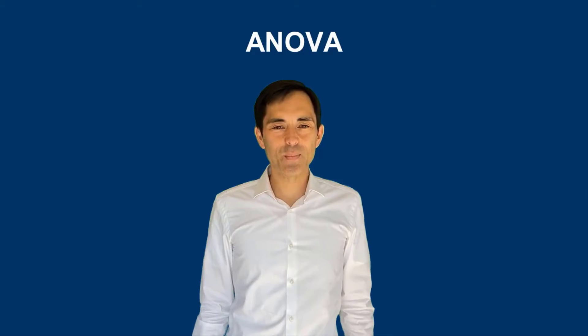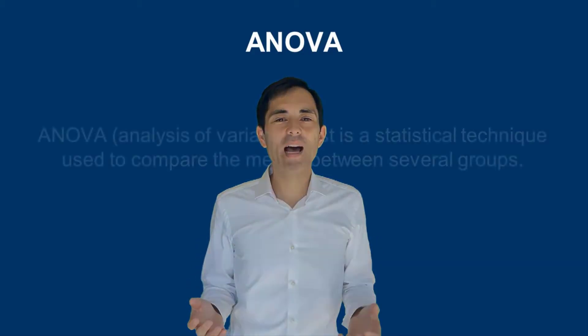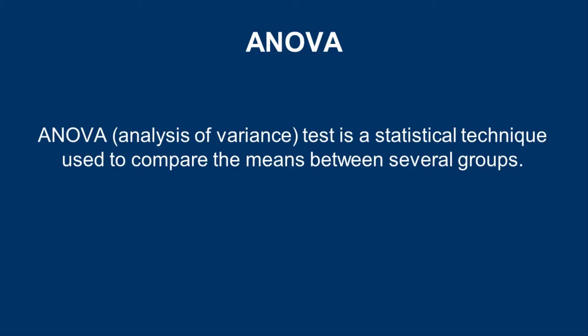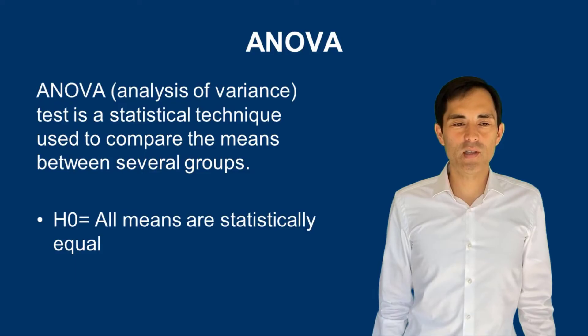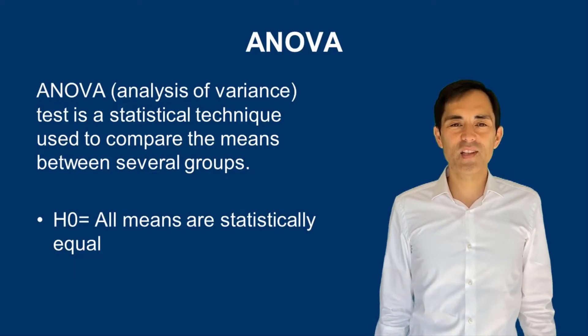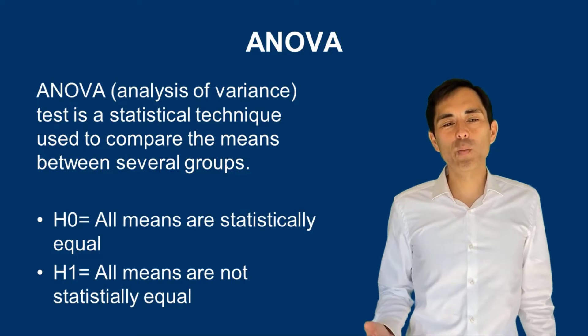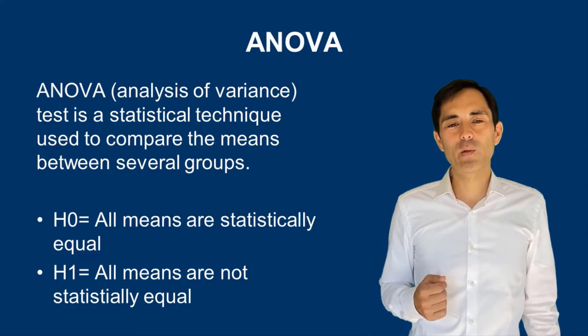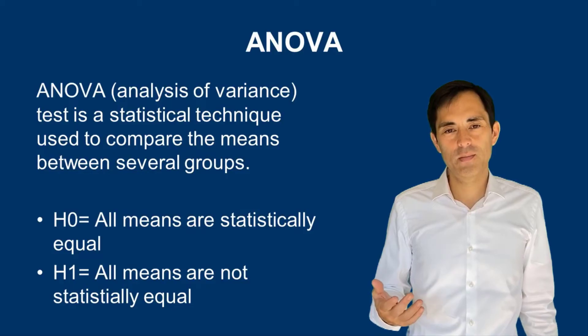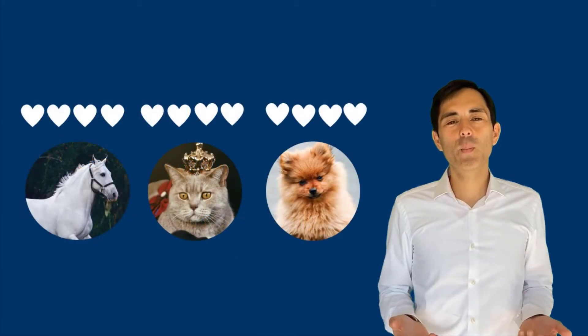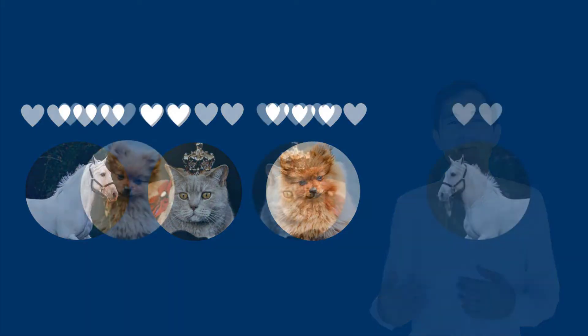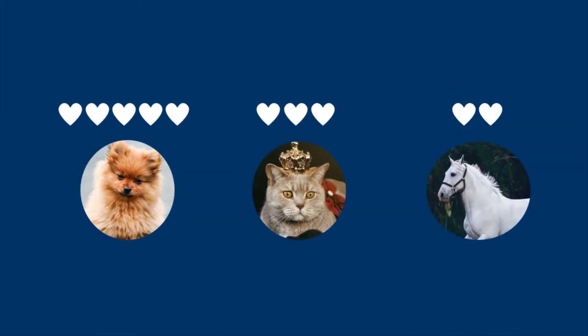After the example, let me give you a formal definition. ANOVA, which stands for analysis of variance, is a statistical technique used to compare the means between several groups — two or more groups. The baseline hypothesis H0 would be: all means are statistically equal. And H1 would be: all means are not statistically equal, meaning they're different. Thinking of the example, the loyalty of dogs, cats, and horses is not the same — one or two of these animals differs from the others.